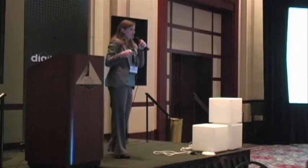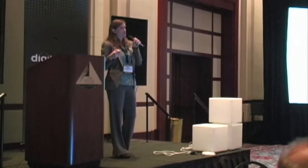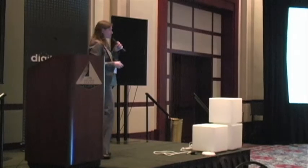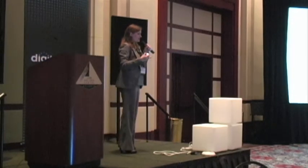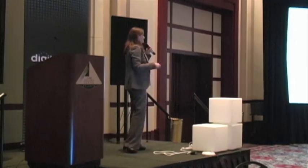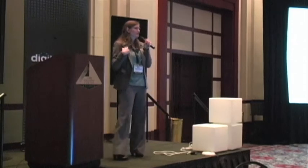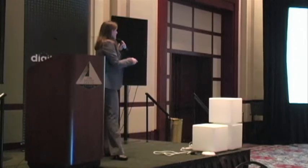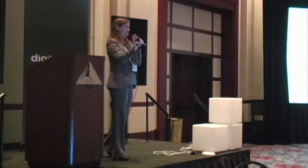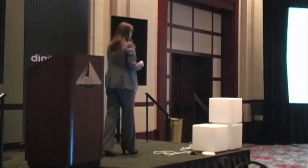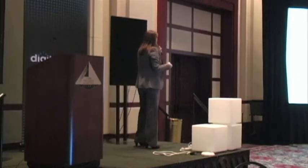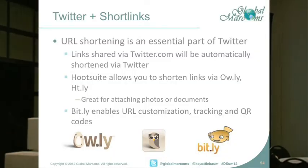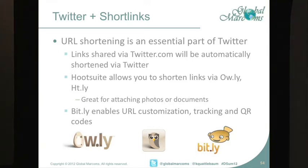Twitter now actually embeds URL shortening into their system — if you go to twitter.com and include a link, it will be auto-shortened by Twitter. But if you share a link through Hootsuite with a short vanity URL like servecob.com, it will still allow you to keep that URL as-is without it being shortened. There are a couple of shorteners you can use: Hootsuite automatically uses Owly and Hootly, which are great for attaching photos and documents.